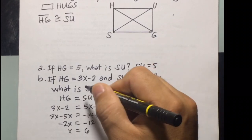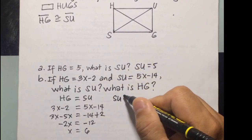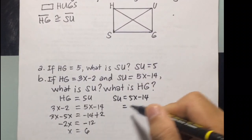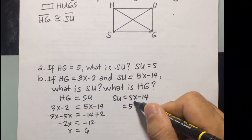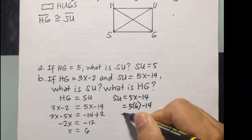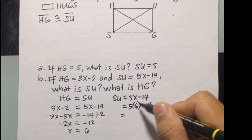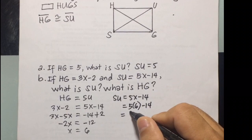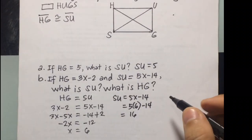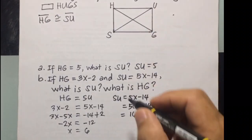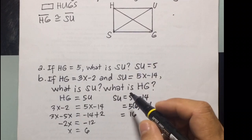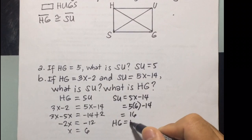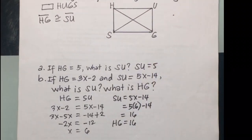So, what is SU? SU is equal to 5X minus 14. Our value of X will be 6. So, we are going to have 5 times 6 minus 14. 5 times 6 is 30 minus 14. That will be 16. Now, if SU is equal to 16, it will also follow that HG is also 16 because they are congruent or equal.